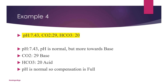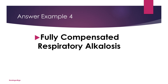In example four: pH 7.43 — normal but towards the alkaline direction; PaCO2 29 — abnormal, towards alkaline; bicarb 20 — abnormal, towards acidic. The PaCO2 corresponds with the pH, so we have a respiratory problem, with compensation from the kidneys because the bicarb is abnormal. The pH is normal, so compensation is full. Answer: fully compensated respiratory alkalosis.